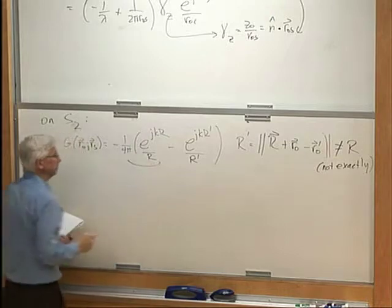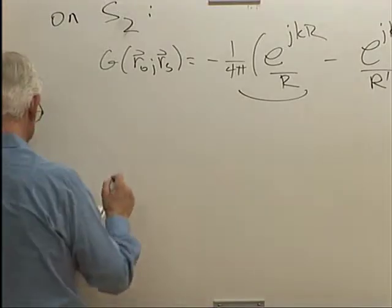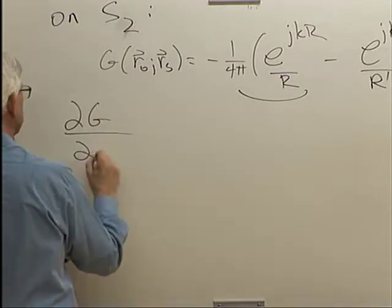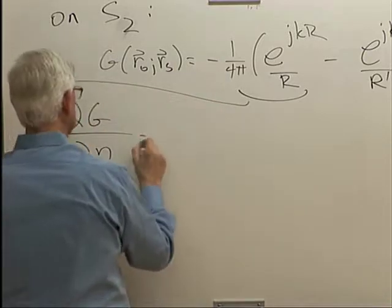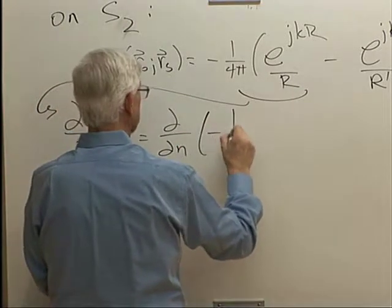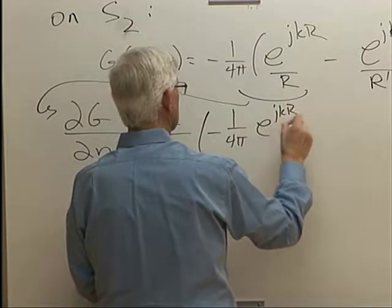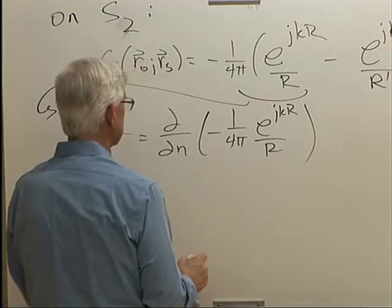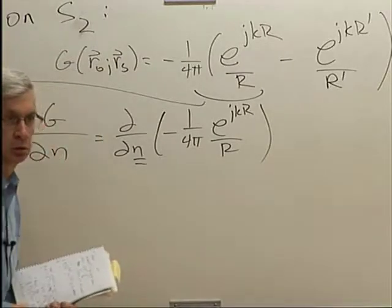First, we're going to work on this term where the partial of G with respect to N is partial of G with respect to N of minus 1 over 4 pi e to the jkR over R. All right, that's pretty easy because the normal derivative here is in the direction of R.